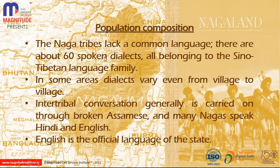The Naga tribes have no common language. There are about 60 dialects in daily use, all belonging to the Sino-Tibetan language family. In some areas, dialects differ from village to village. Inter-tribal communication is often conducted in Assamese, and many Naga people also speak English and Hindi. English is the official language of the state.